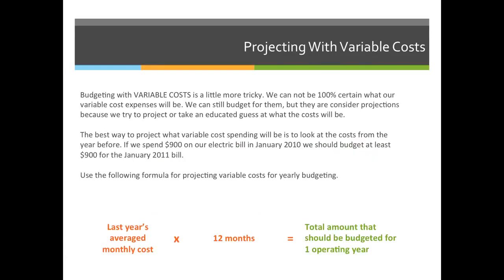When budgeting with variable costs, as opposed to fixed costs, it's a little more tricky. We cannot be 100% certain of what our variable cost expenses will be. We can still budget for them, but they are considered projections because we try to project or take an educated guess at what the cost will be. We're just guessing — we have no idea how much it's going to be.